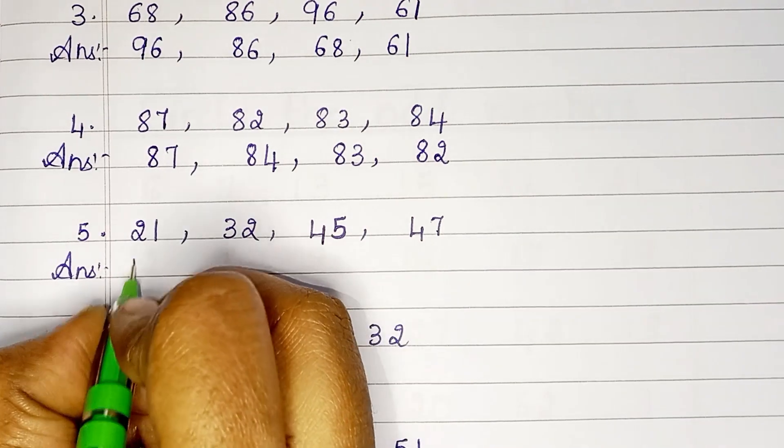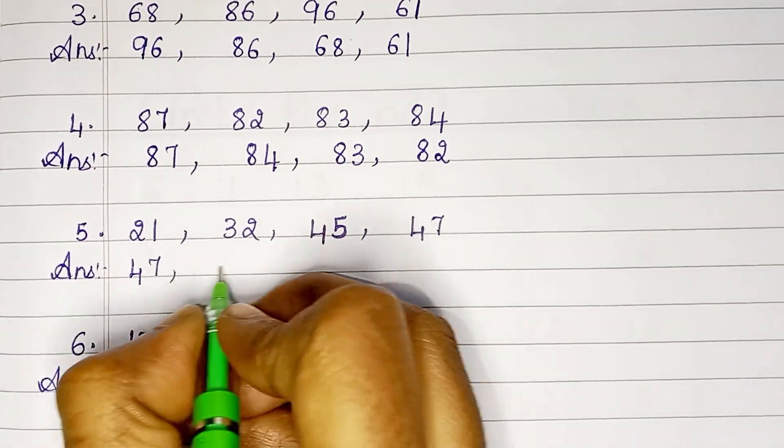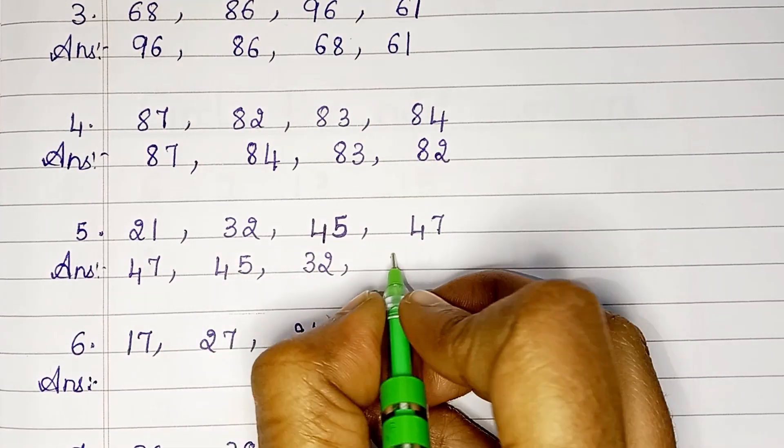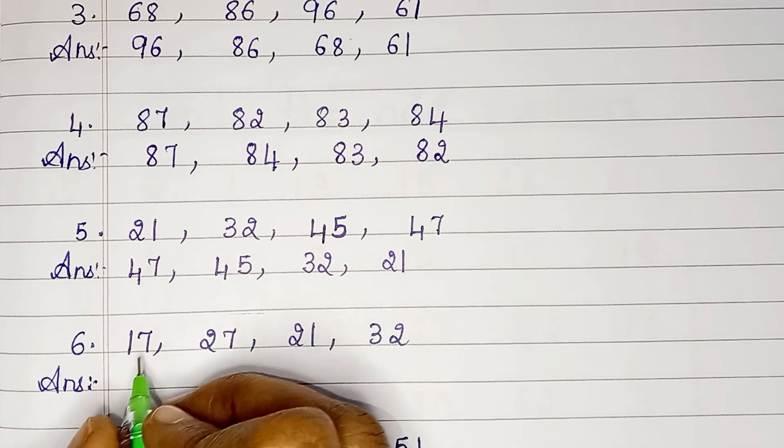The next set of numbers: 21, 32, 45, 47. In descending order: 47, 45, 32, 21.